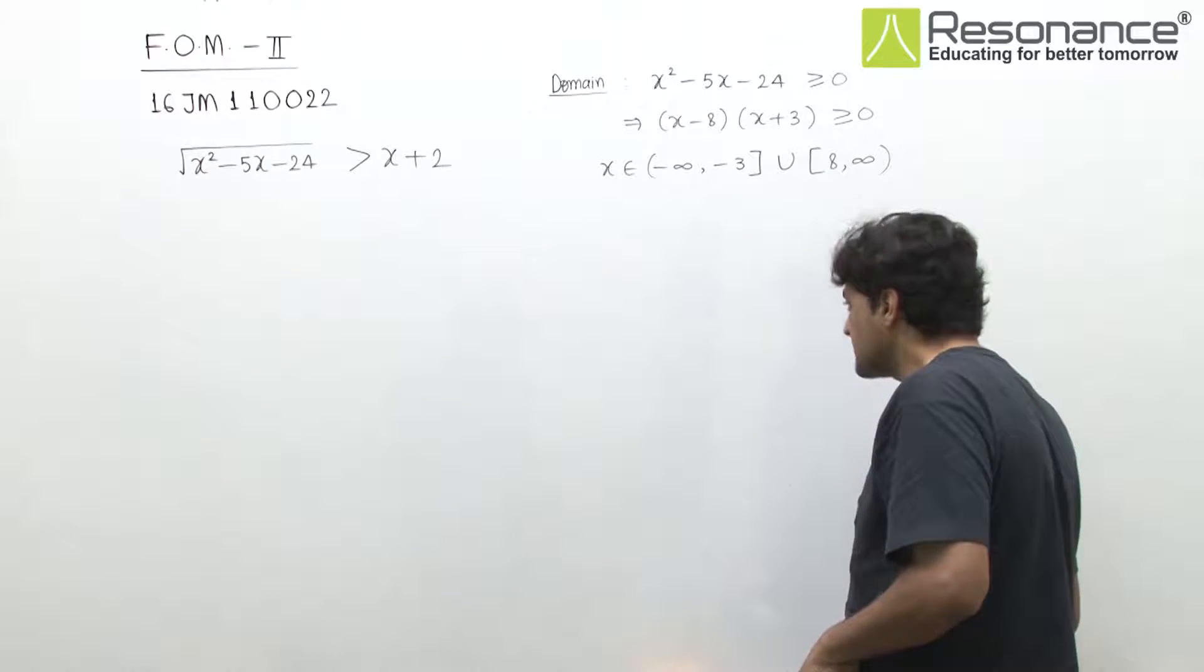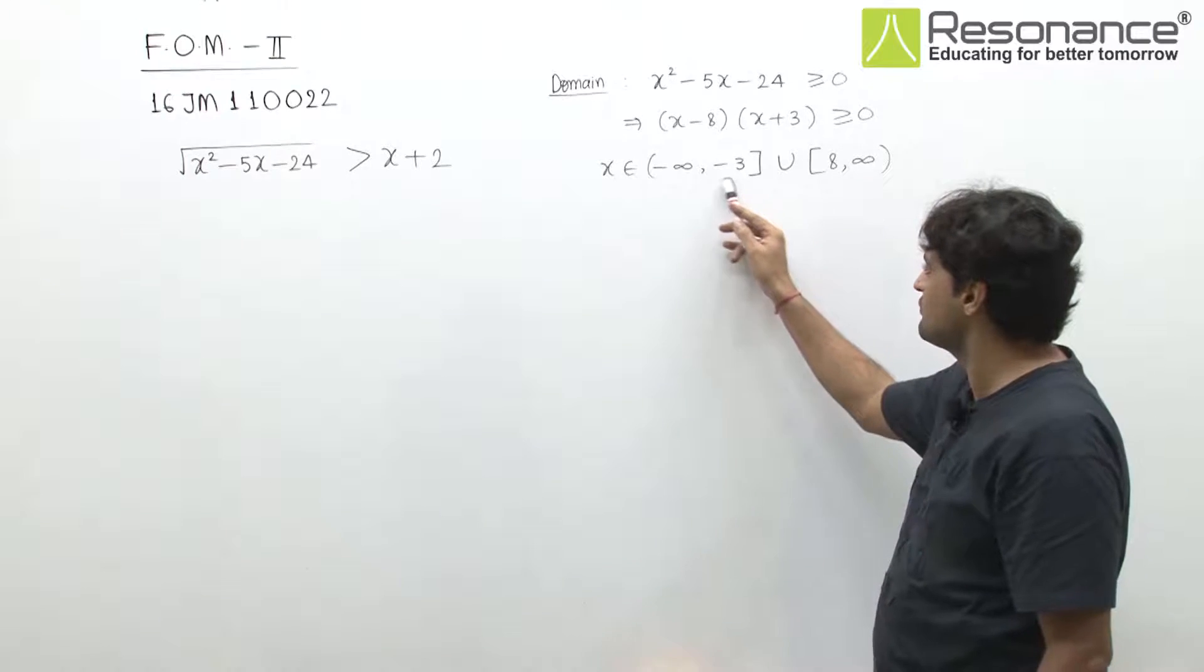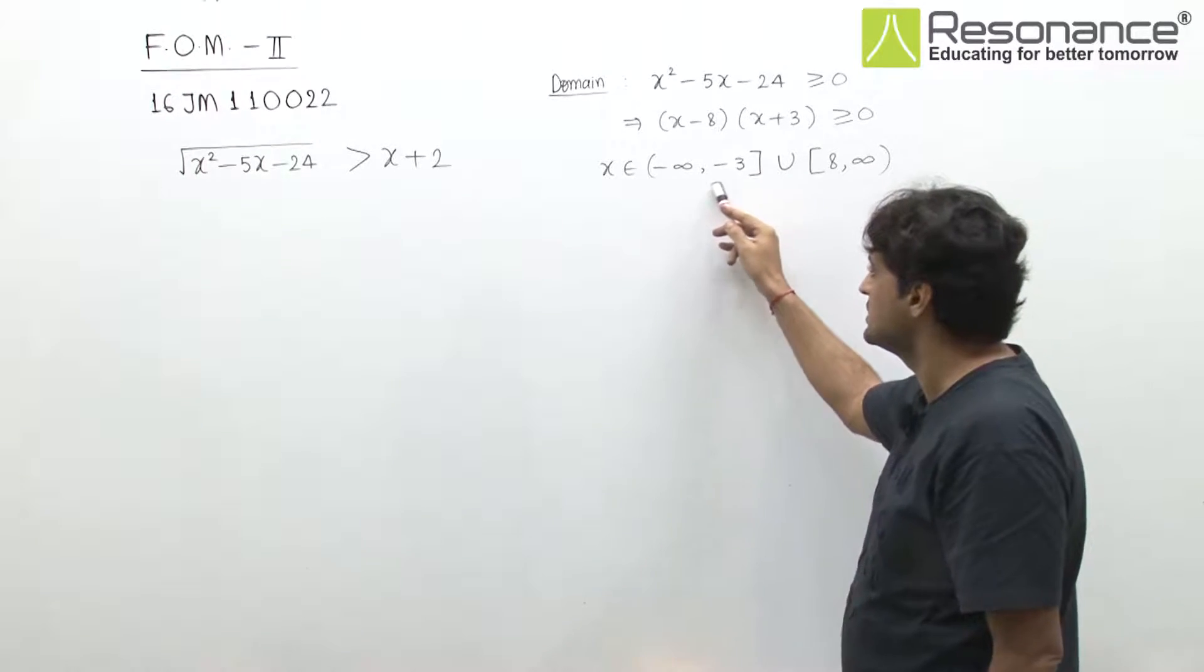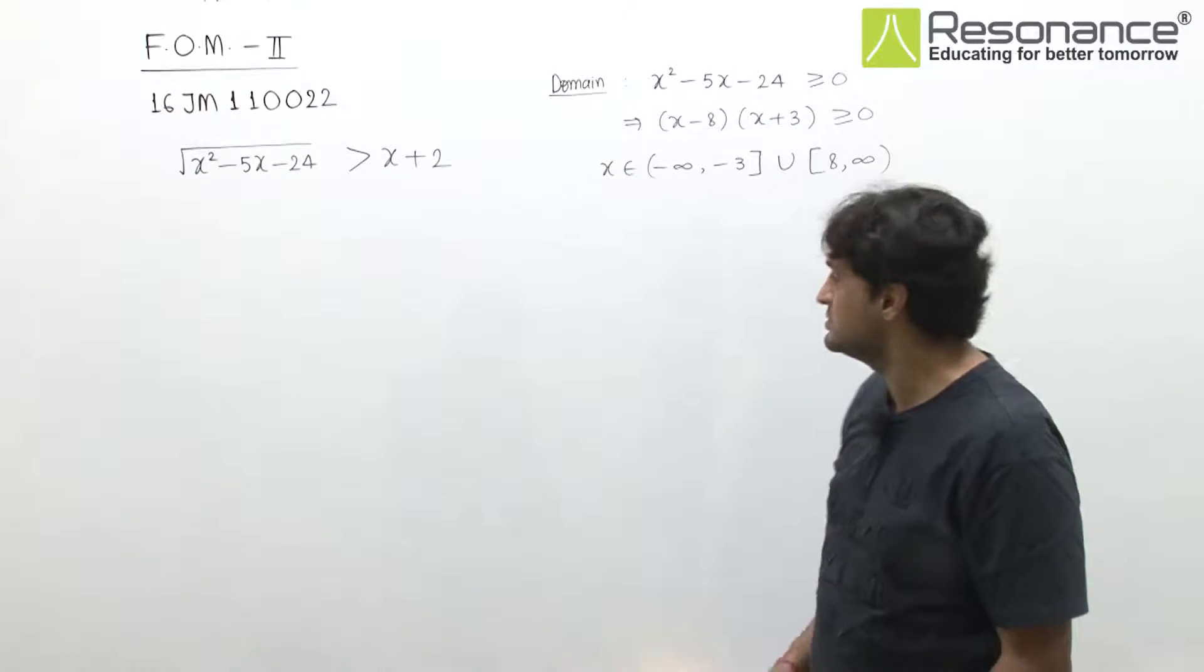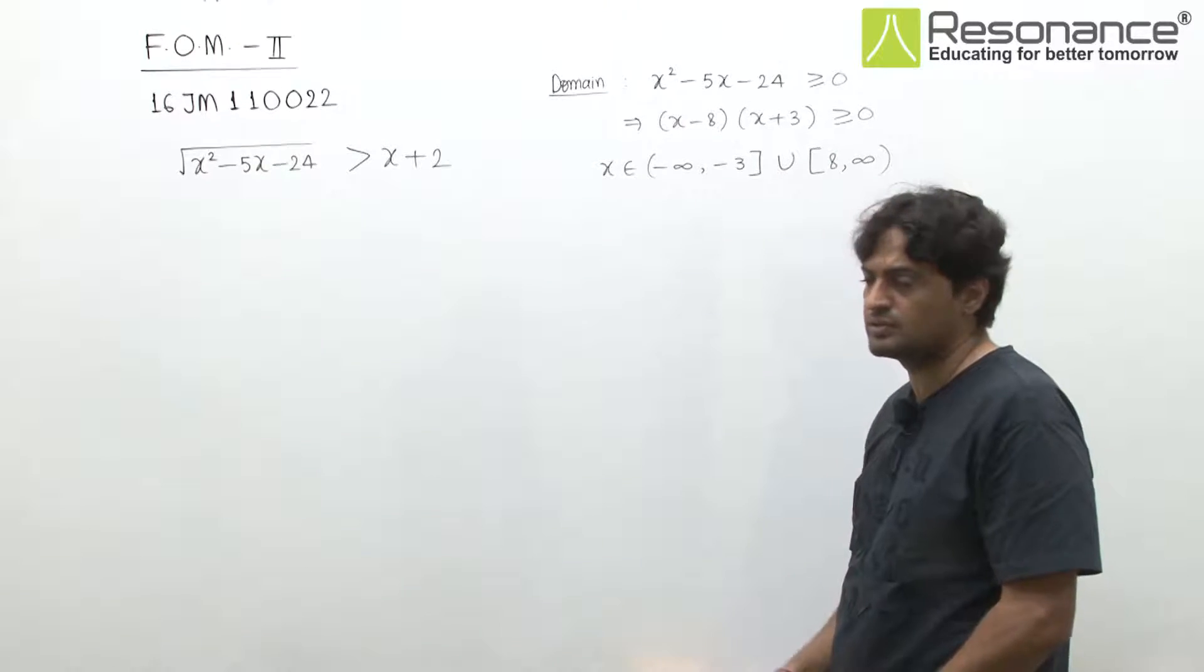Now we can square only when RHS is non-negative. We can observe that in this interval the RHS is negative, so in this case we cannot square. In this case we can square because both sides are non-negative.